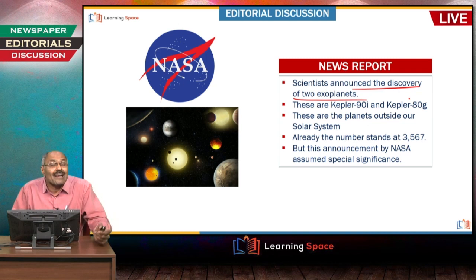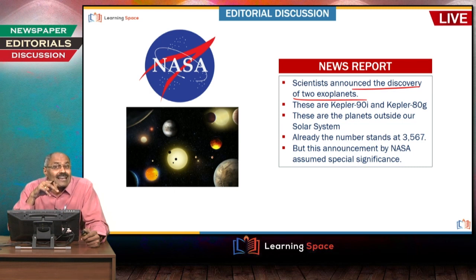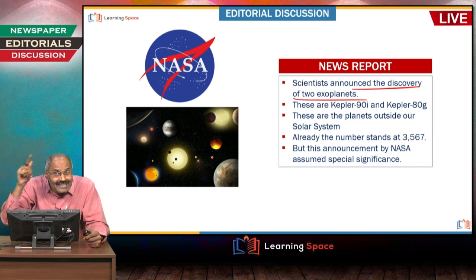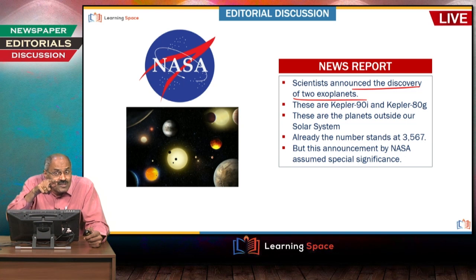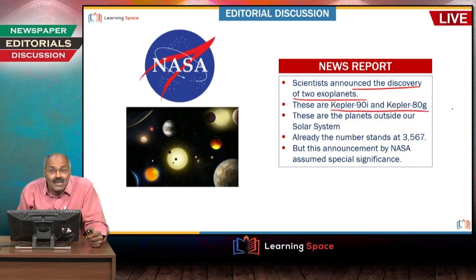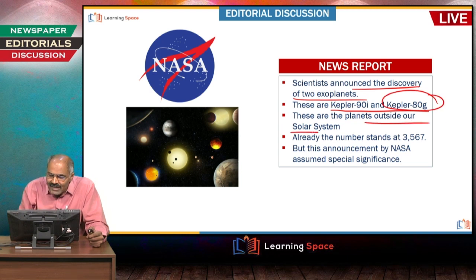Scientists announced the discovery of two exoplanets. What are exoplanets? Earth revolves around the sun, and the sun is a star with eight planets. Similarly, other stars also have planets — those are known as exoplanets. Scientists announced the discovery of two exoplanets: Kepler-90i and Kepler-80g, planets outside our solar system.